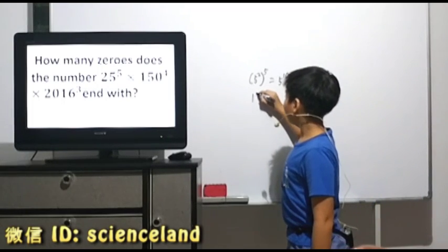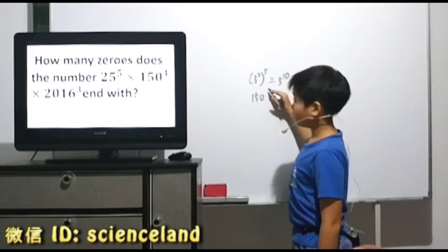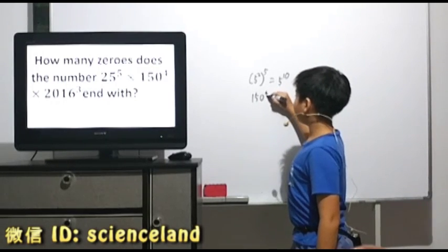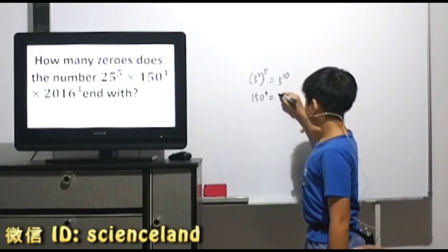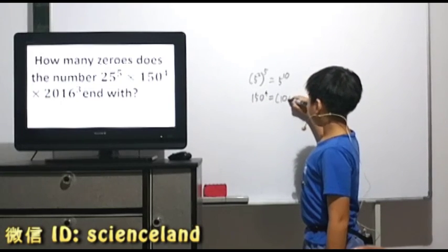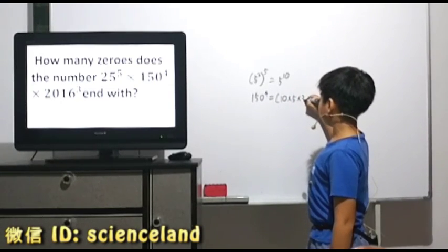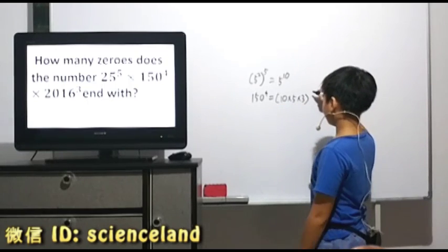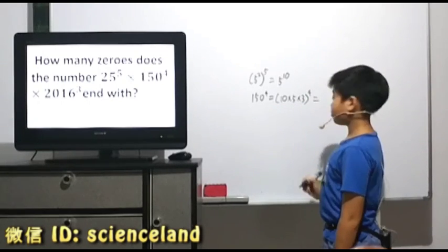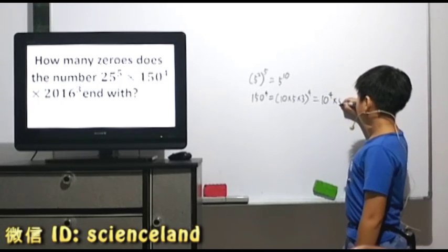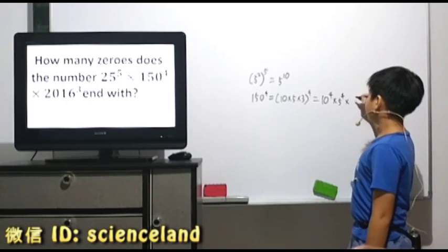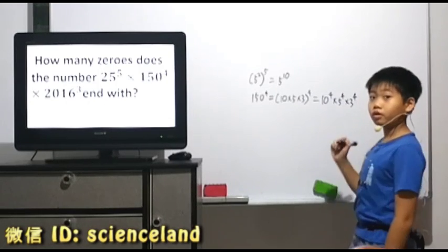Next is 150 to the power of 4, which becomes 10 times 5 times 3, or to the power of 4. So, then it becomes 10 to the power of 4 times 5 to the power of 4, and finally 3 to the power of 4.